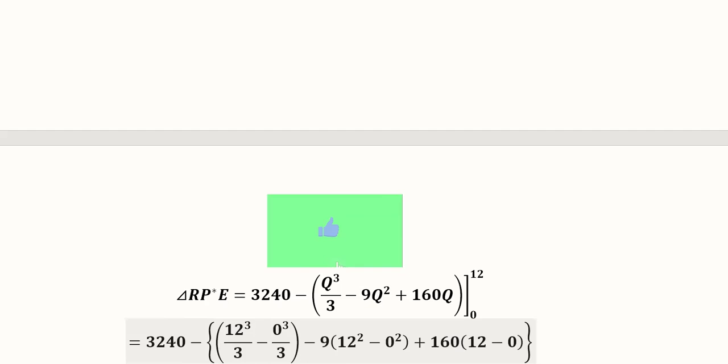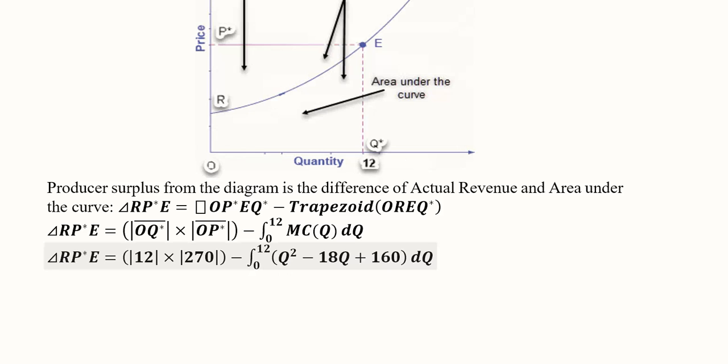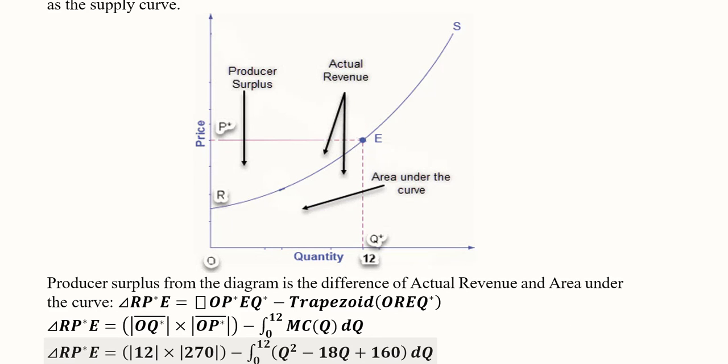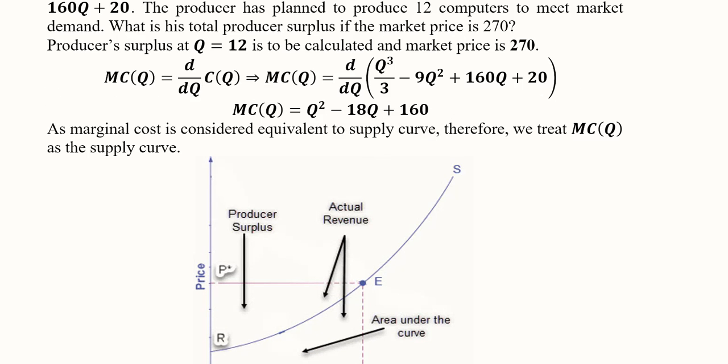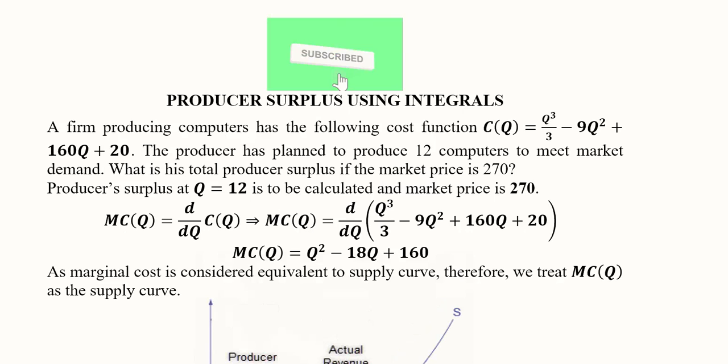By using the integrals, we have found the producer surplus and this was the diagrammatical and formula-oriented interpretation, and this was the given information that we used to find the producer surplus by using the integrals. Thank you.